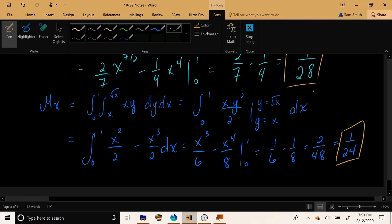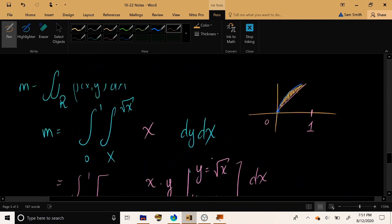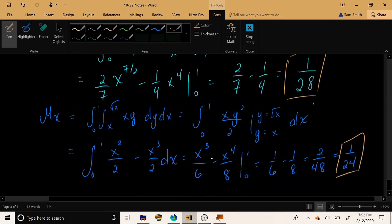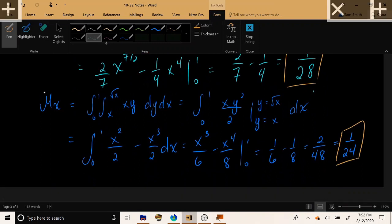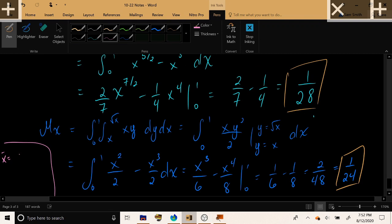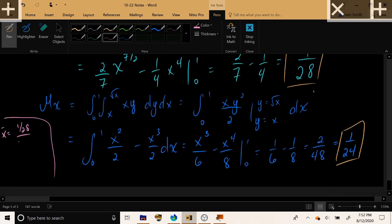Alright, well we've already filled up an entire page, but we're not quite done yet, because we still need to actually calculate the coordinates of the center of mass. But all that really remains to be done at this point is a little bit of fraction arithmetic. We have x̄, which can be found by taking the moment about the y-axis, which is 1/28, and dividing it by the total mass, which was 1/15. And then for ȳ, we can do the same thing but taking the moment about the x-axis, which is 1/24, and dividing it by the total mass, which gives 15/24.